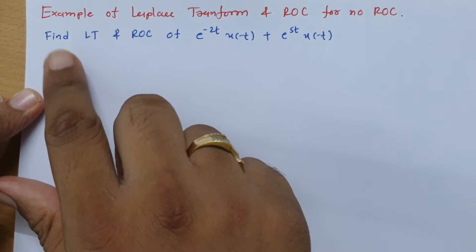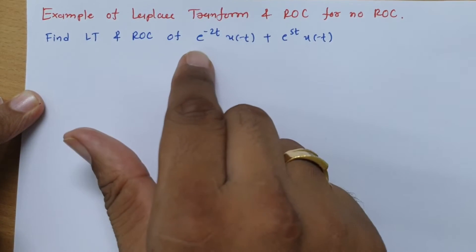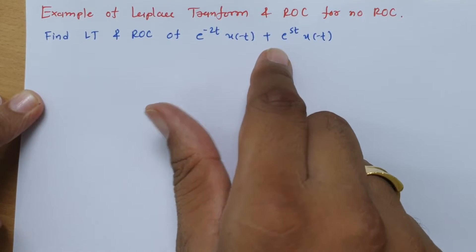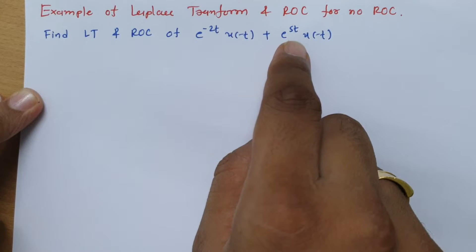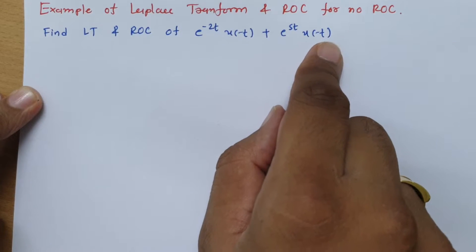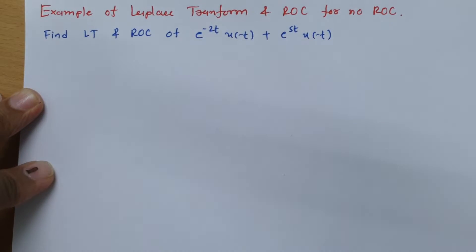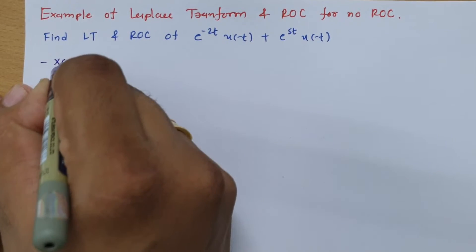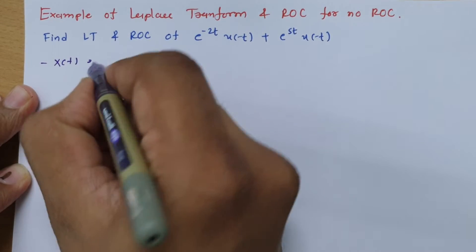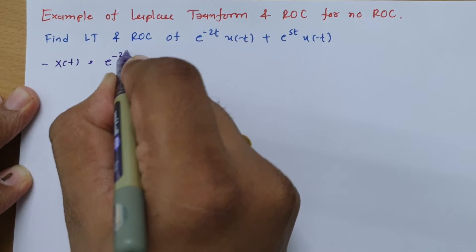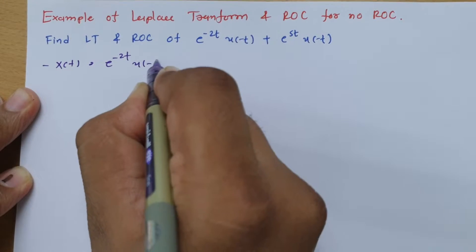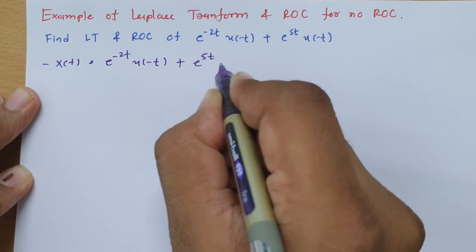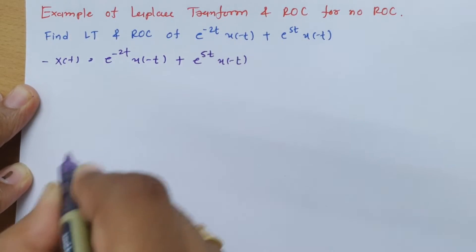The question is: find the Laplace transform and ROC of the signal x(t) = e^(-2t) u(-t) + e^(5t) u(-t).